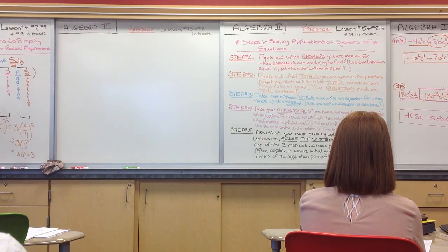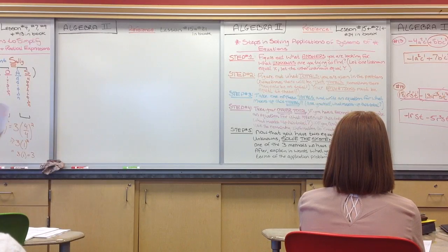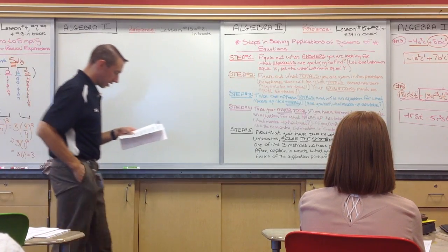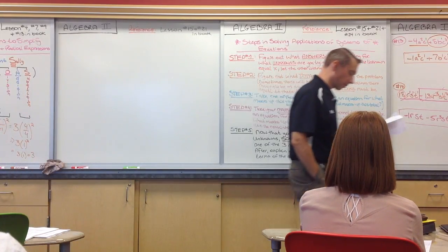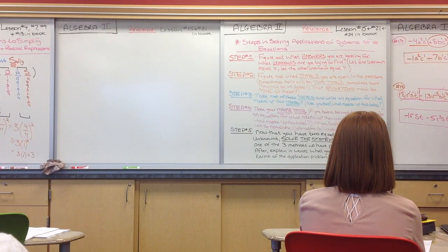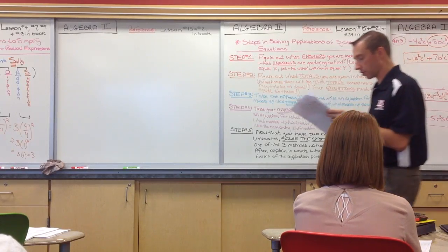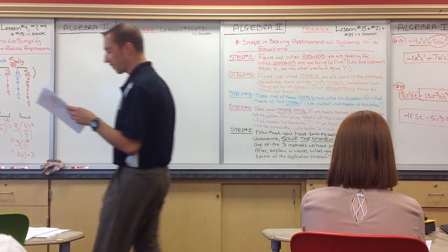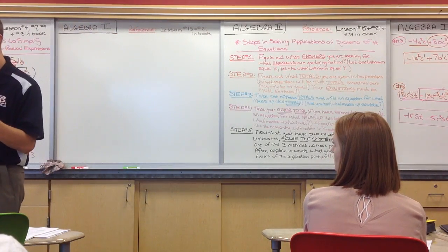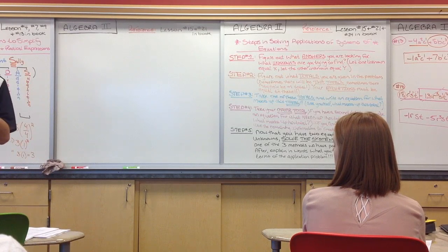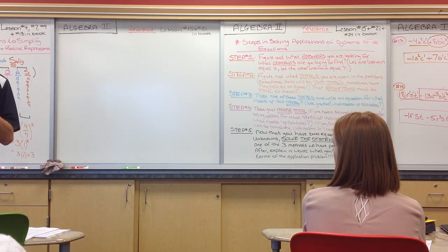All right. So, number six. Harold has a summer lemonade stand where he sold small cups of lemonade for $1.25, large cups for $2.50. Harold sold a total of 155 cups of lemonade and collected a total of $265. How many cups of each type did he sell?